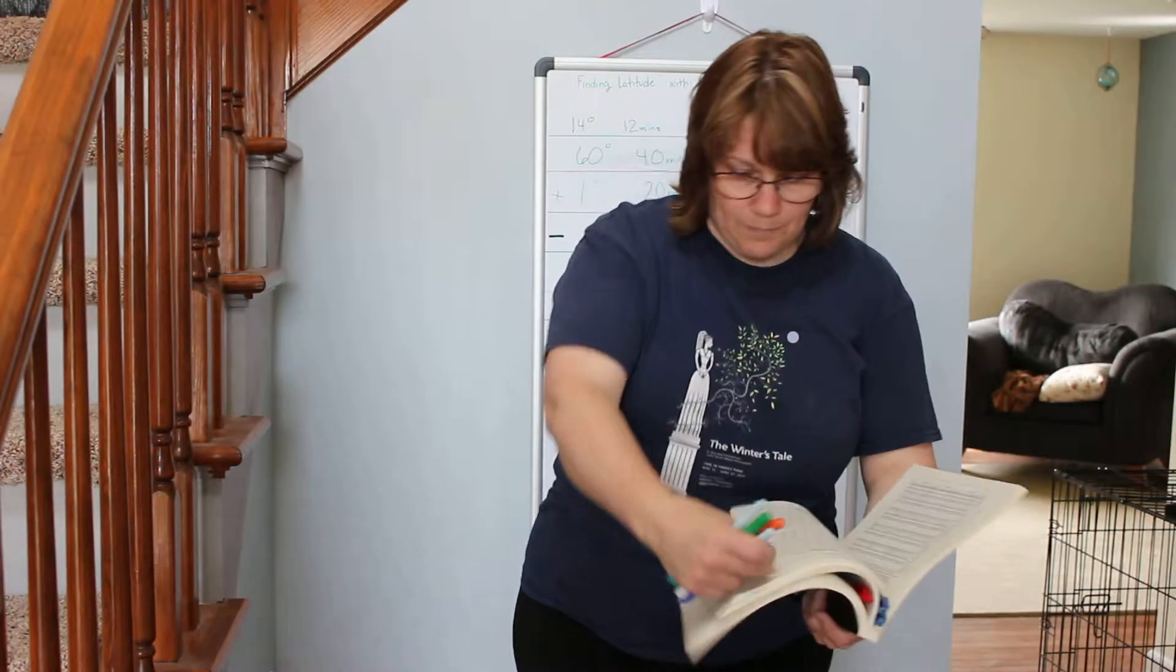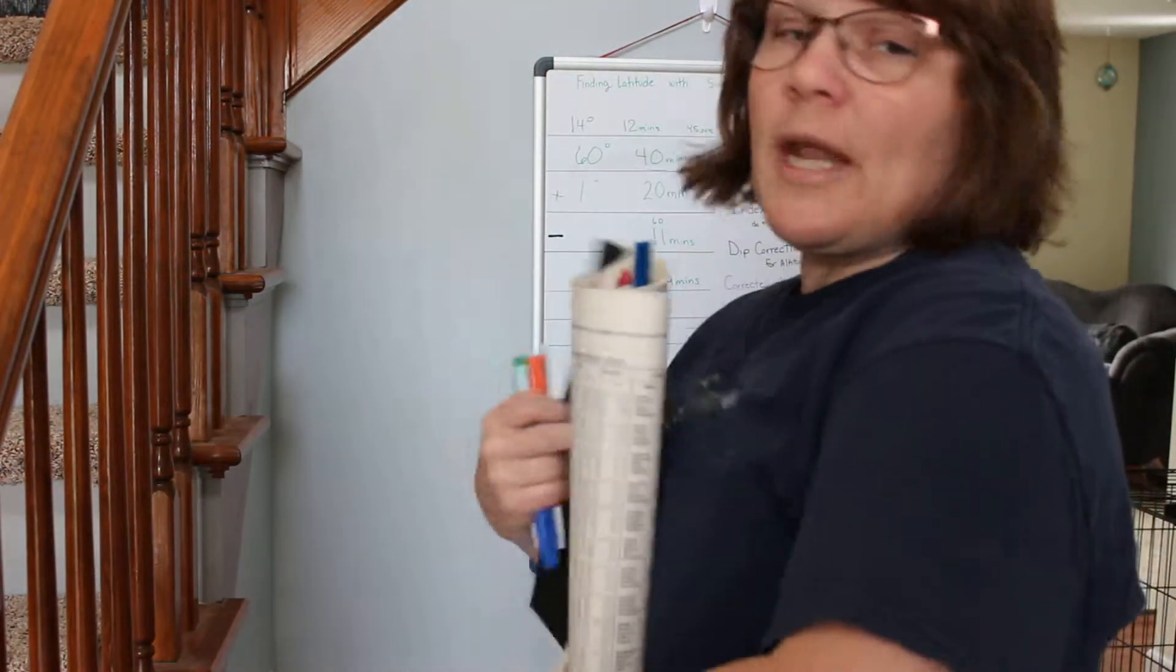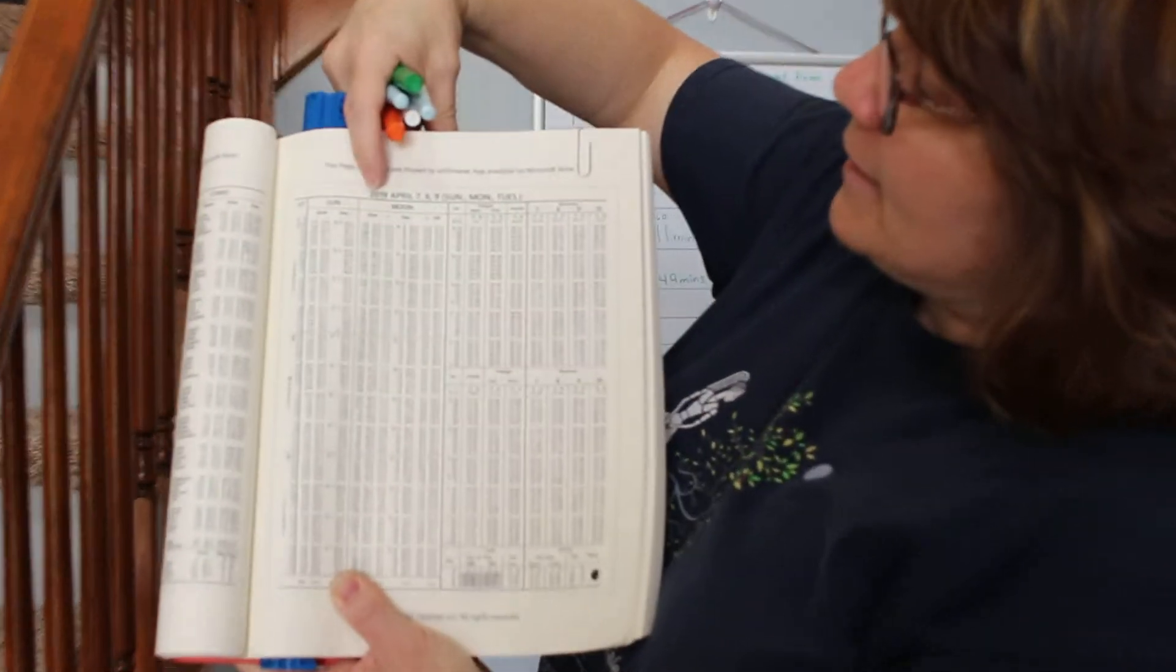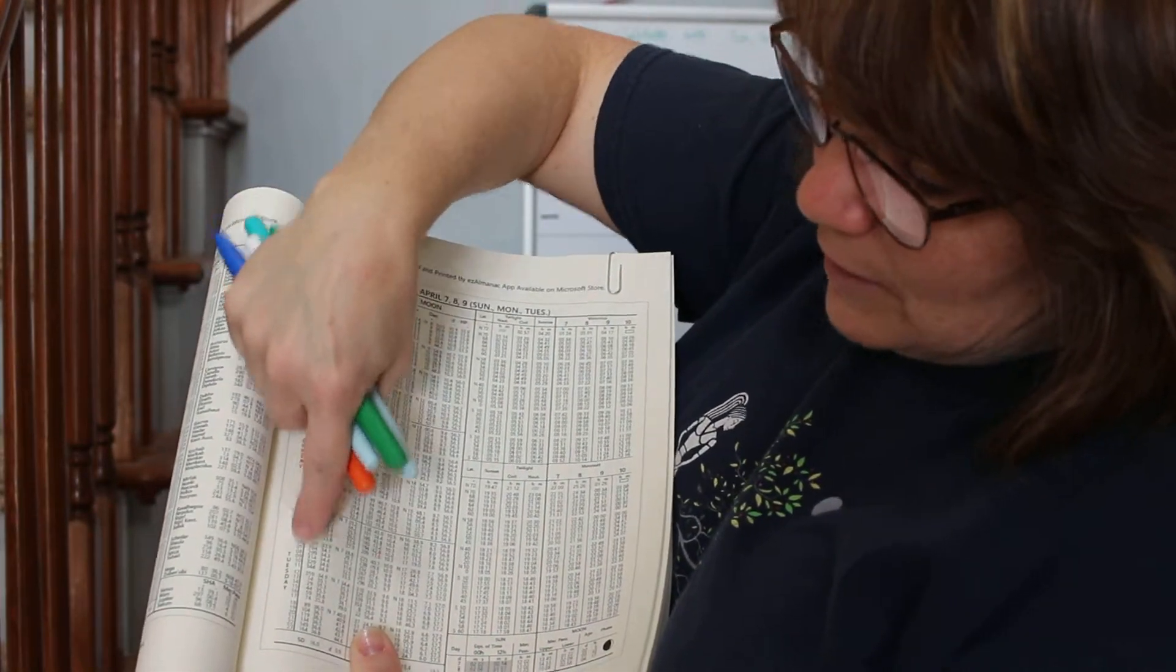Okay, so today's reading, the almanac is really simple to use. I look for first my date and it's April 7th, and then I go down here. This is April 7th, this is April 8th, this is April 9th.